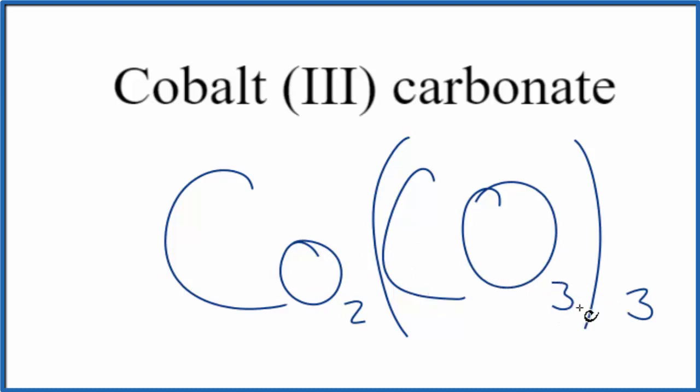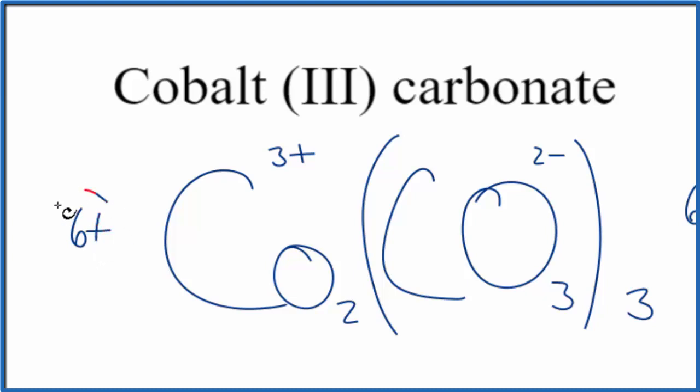So just something to be careful of. Let's quickly check our work. We said cobalt was 3-plus, and the whole carbonate ion here is 2-minus. 3 times 2-minus, that's 6-minus. 2 times 3-plus, that's 6-plus. So the net charge is zero. These add up to zero.